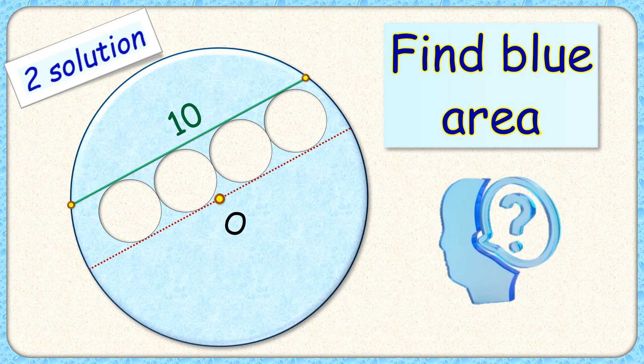This interesting question we have a big blue circle in which 4 congruent holes are made. The length of this green line segment is 10 cm. The exciting part is with this limited information we have to find the remaining area of the blue circle.